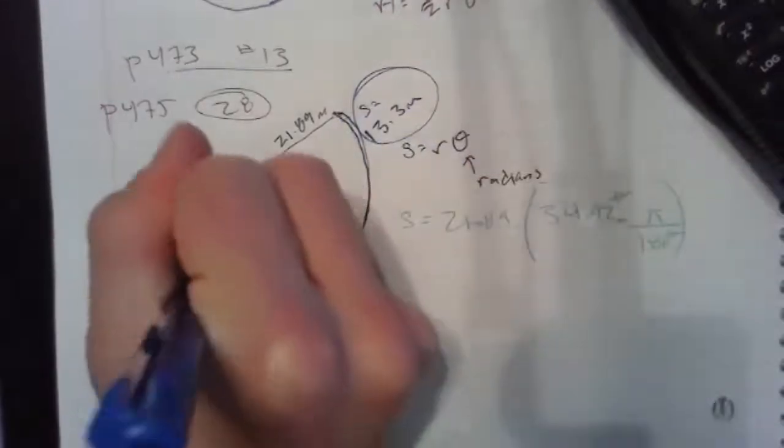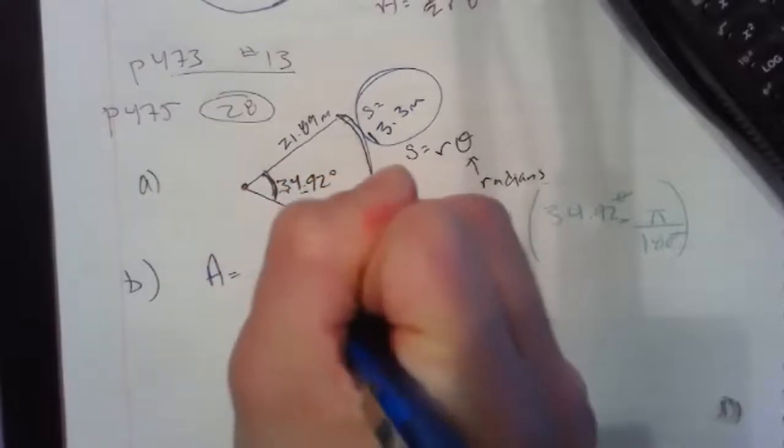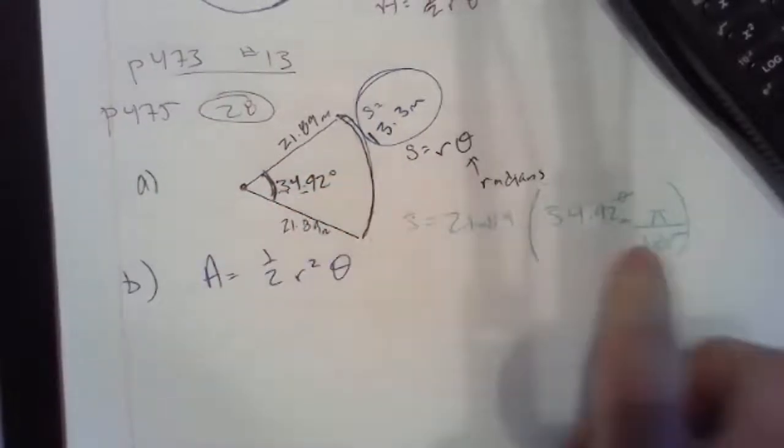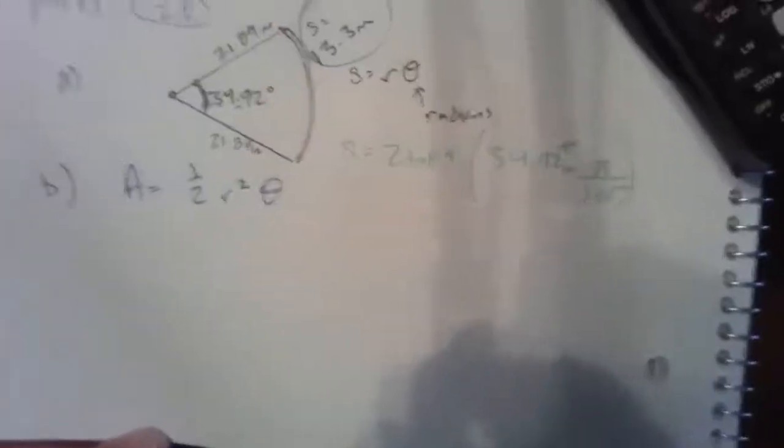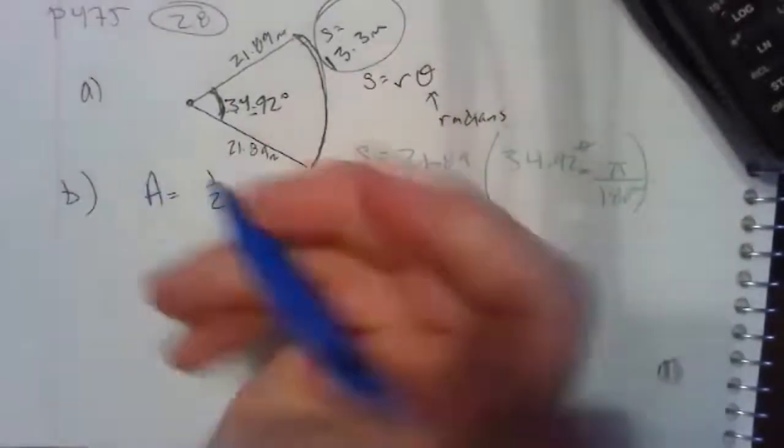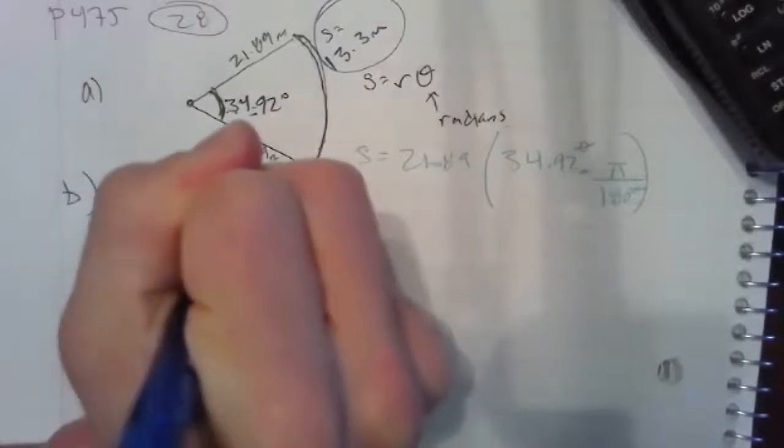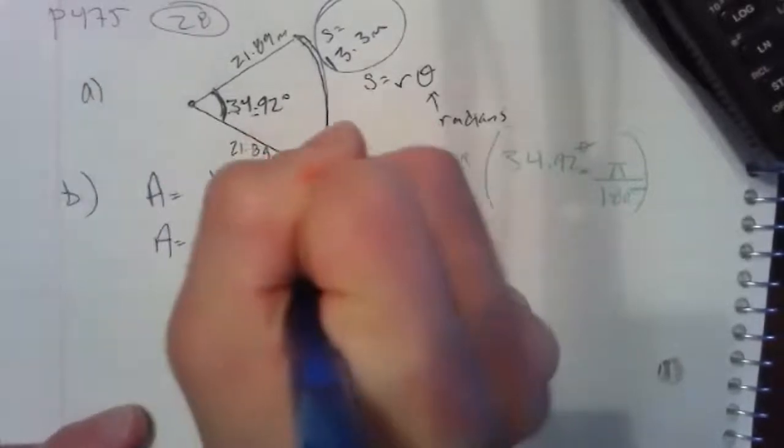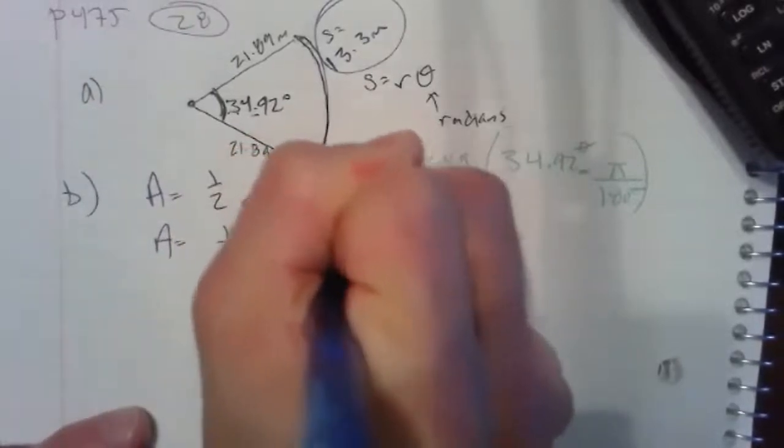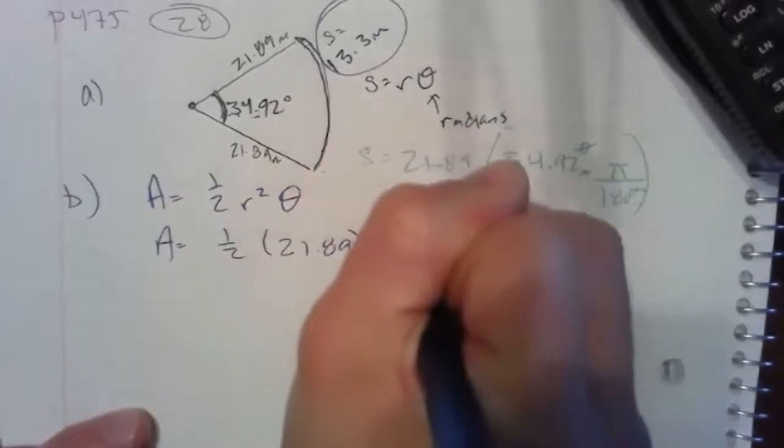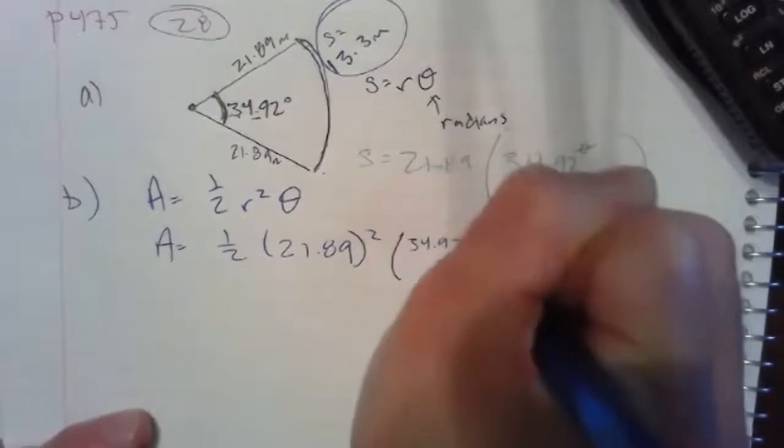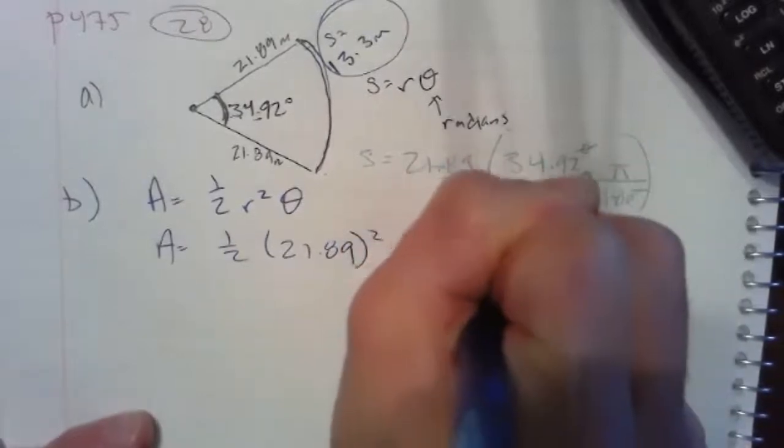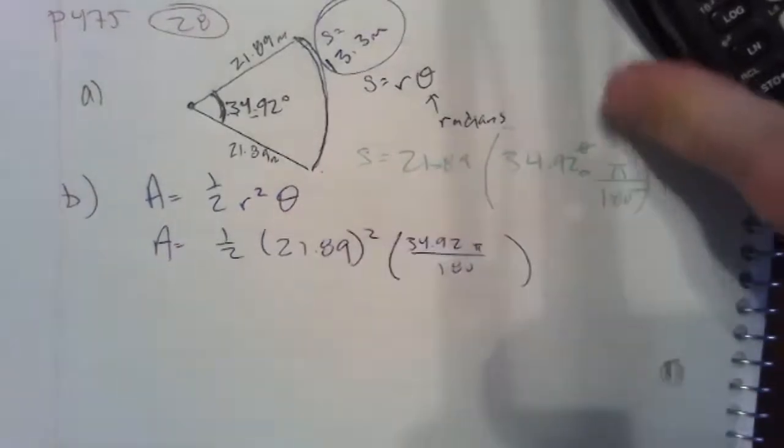Now, I never really wrote down what this was as a radian, and it would probably be too convoluted. I'd rather let the calculator take care of it. So we'll just let the calculator take care of it again. In this case though, I have to do one half times 21.89 squared, and then multiply by 34.92 pi all over 180. And if I type it in the calculator like this, order of operations is going to take care of it. So I'm going to just write in 0.5 because it's just easier that way.